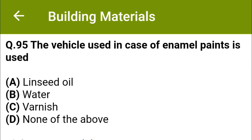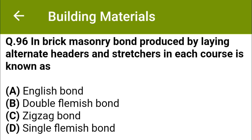The vehicle used in case of enamel paints is: option A, linseed oil; option B, water; option C, varnish; option D, none of the above. The correct answer is option C, varnish.